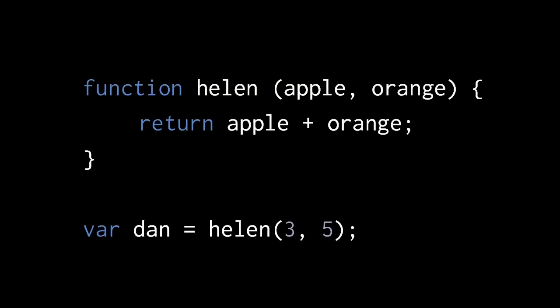So here we create a function with the name Helen, give it two parameters, apple and orange, and have it simply return the sum of the two parameters. We then invoke the function with the arguments 3 and 5 and assign the return value to a new variable Dan.